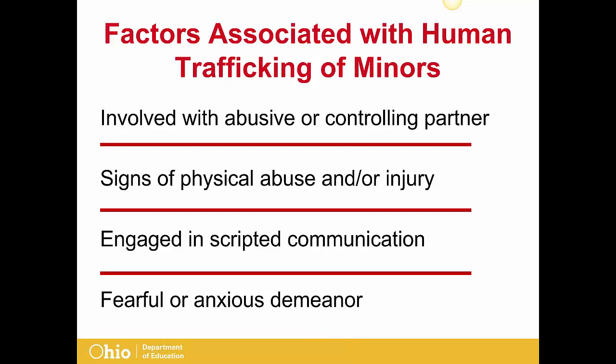Factors associated with human trafficking of minors include: the minor is involved with an abusive or controlling partner or boyfriend; the minor has signs of physical abuse and/or injury; the minor appears to be engaging in scripted communication; the minor has a fearful or anxious demeanor; the minor appears hungry or malnourished; wears clothing that is not appropriate based on season or weather; appears addicted to drugs; and shows a shift in behavior, dress, or belongings, such as sudden possession of expensive items.